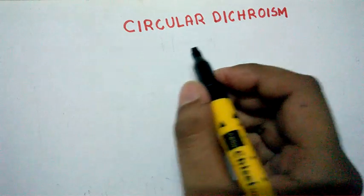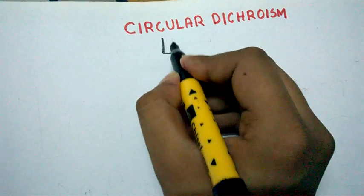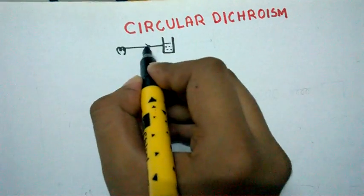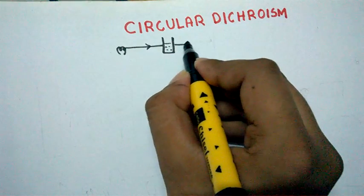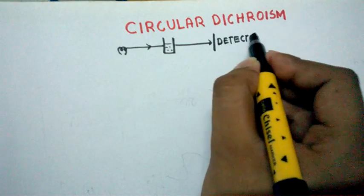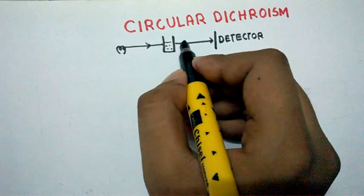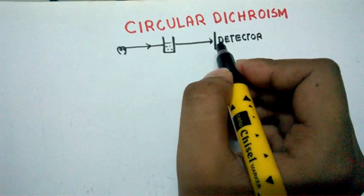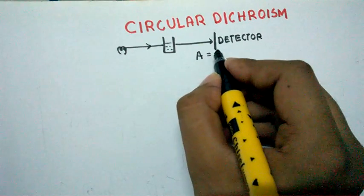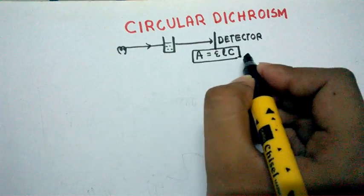Like any other spectroscopy, circular dichroism is quite similar. In visible spectroscopy, we have our sample in a container, we shine light inside the container, some amount of light is absorbed by the solution, and some amount of light is transmitted. The transmitted light hits a detector and we detect the absorbance of that particular solution. Using that absorbance we understand the concentration, as we know from Beer-Lambert law: absorbance equals extinction coefficient times path length times concentration.